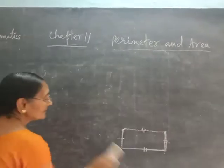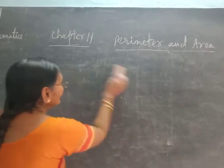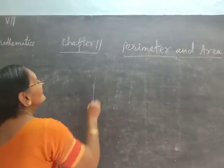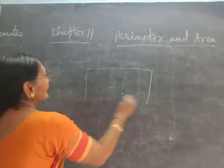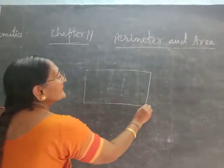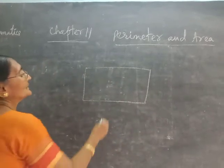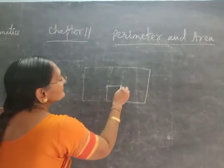Now, some more perimeters you have to find. Suppose a rectangle is given with perimeter = 2 × (L + B). Suppose here some portion is cut out from the rectangle.